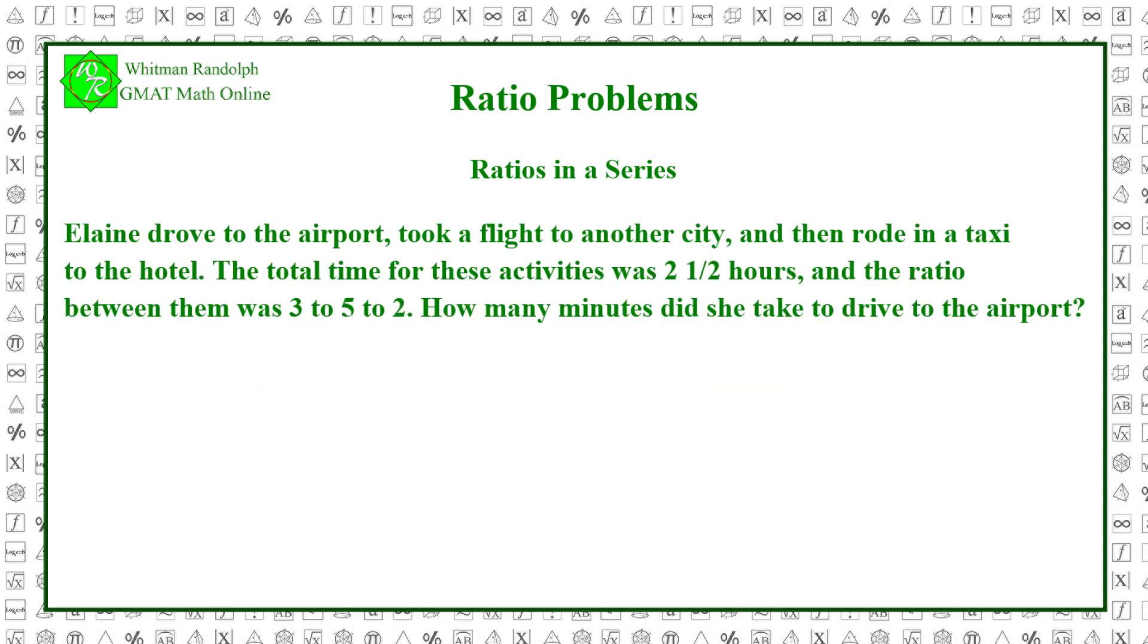Problem: Elaine drove to the airport, took a flight to another city, and then rode in a taxi to the hotel. The total time for these activities was 2 and a half hours, and the ratio between them was 3 to 5 to 2. How many minutes did she take to drive to the airport?